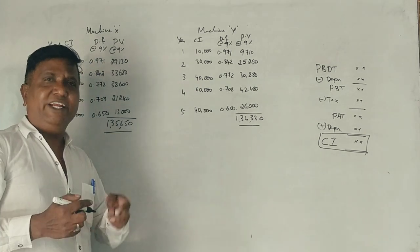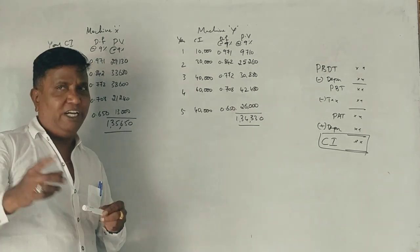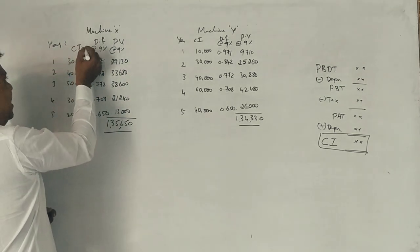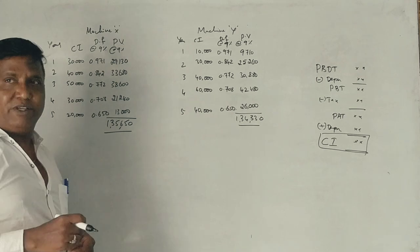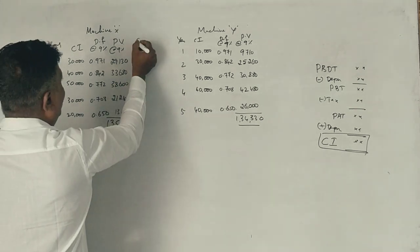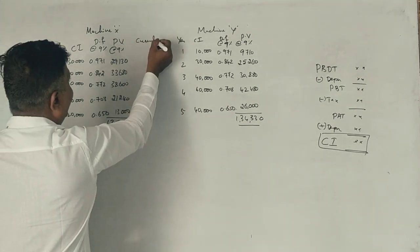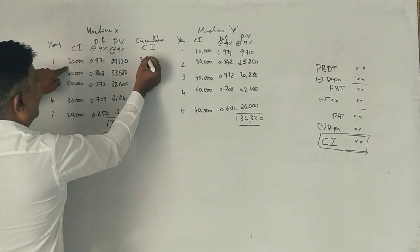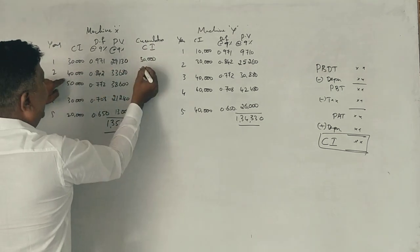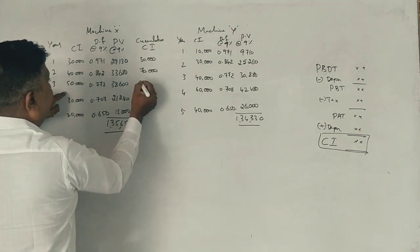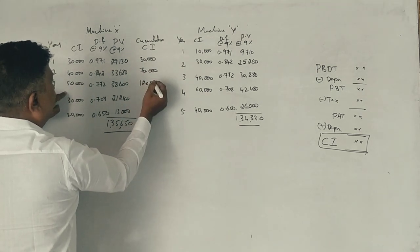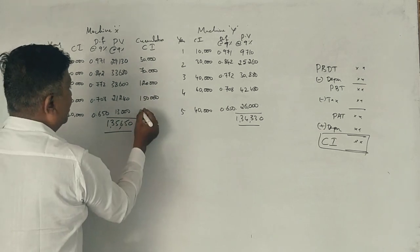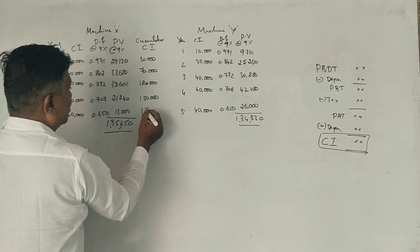Now we have to calculate 2 things. Payback period and net present value. To calculate payback period the given cash inflows are not uniform. Therefore we have to take cumulative cash inflows. 30,000, 70,000, 120,000, 150,000, 170,000.